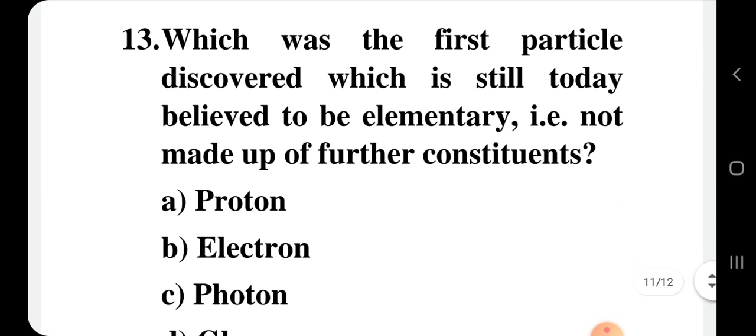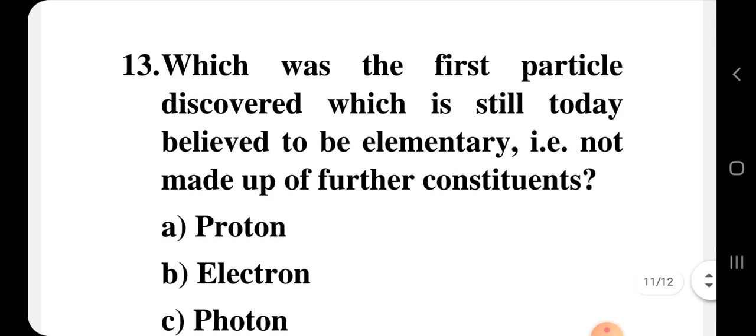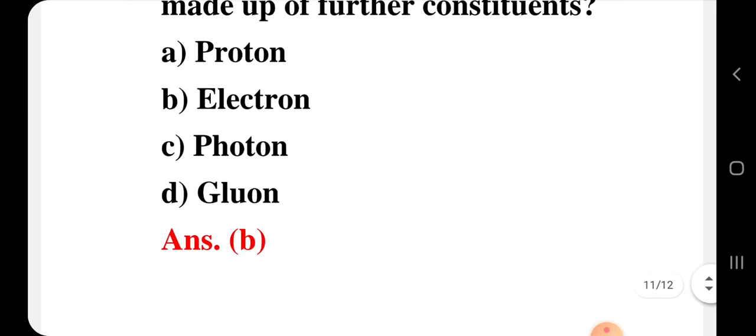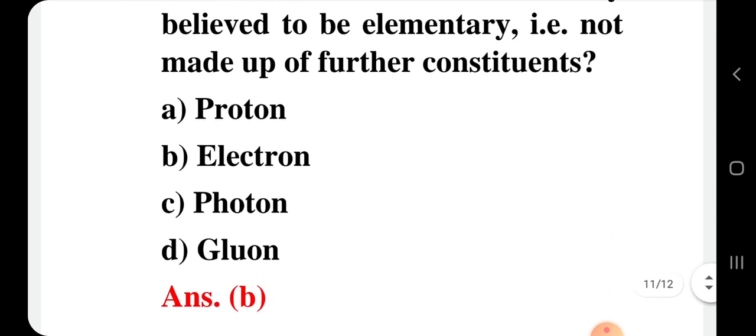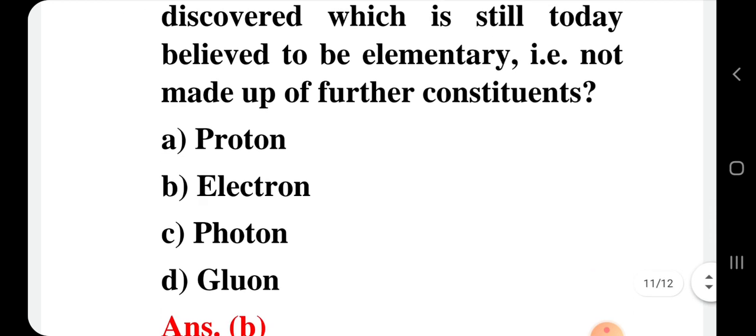Question number 13: Which was the first particle discovered that is still today believed to be elementary — that is, not made up of further constituents? The first such particle discovered was the electron, and we still consider the electron a fundamental particle today. The correct option for question 13 is option B: electron.